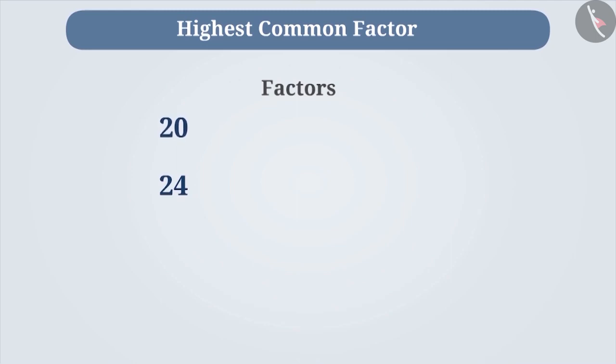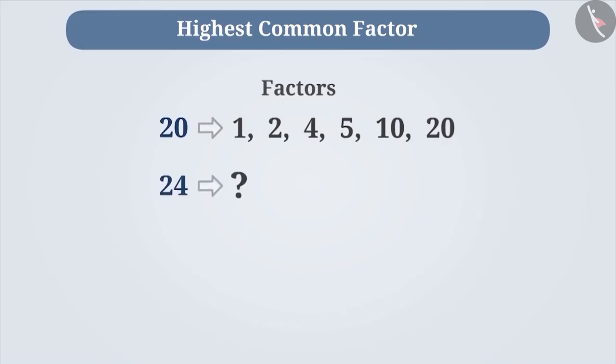The factors of 20 are 1, 2, 4, 5, 10 and 20. Similarly, can you list the factors of 24? Think about it.